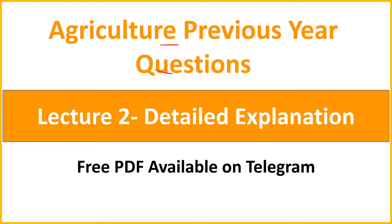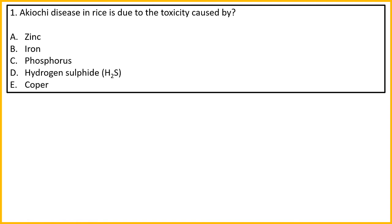You will have a PDF available. Let us quickly start. Today's question is related to a disease called Akiyoshi disease, which is basically found in rice. It is caused due to the toxicity caused by a particular compound. Which toxic compound causes this disease problem?